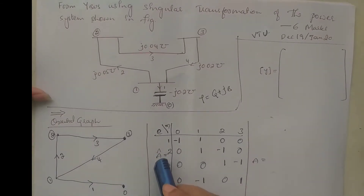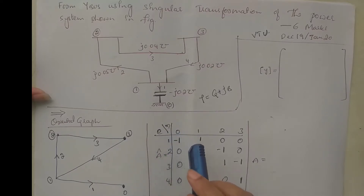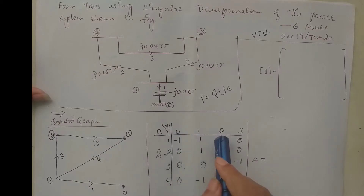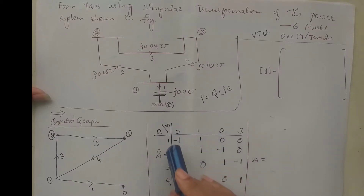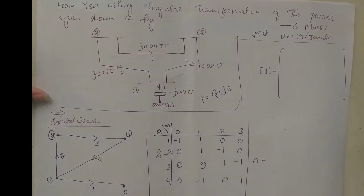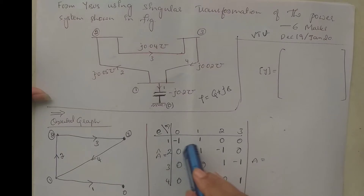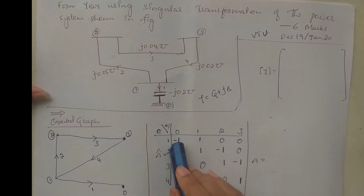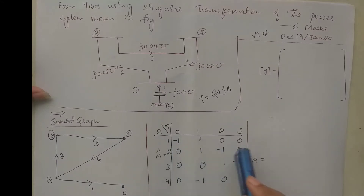Then we have to form the element-node incidence matrix — element versus node. Columns have elements and rows have nodes: elements 1, 2, 3, 4 and nodes 0, 1, 2, 3. The first element is oriented between 1 and 0, away from 1, so take it as positive (+1), and towards 0, so minus 1. Row: -1, 1, 0, 0.